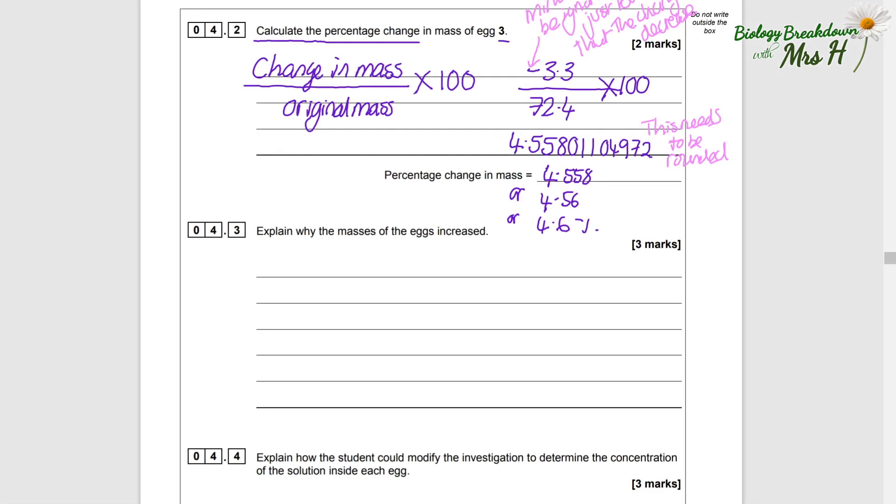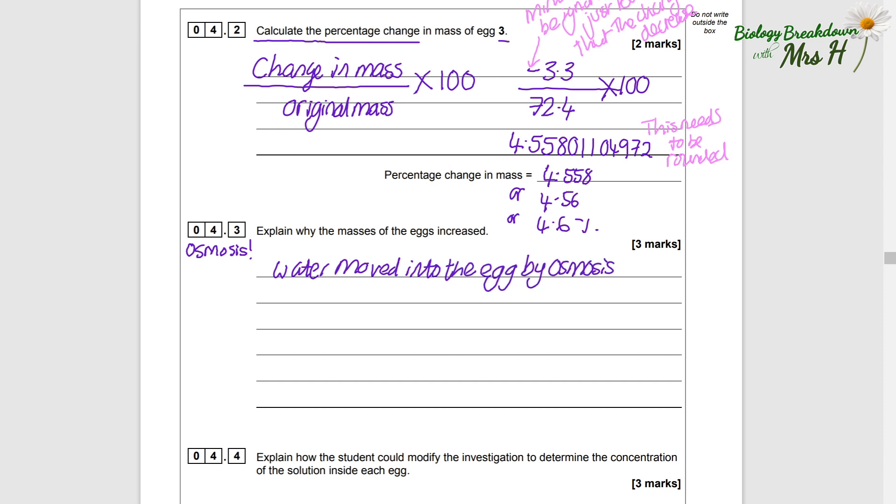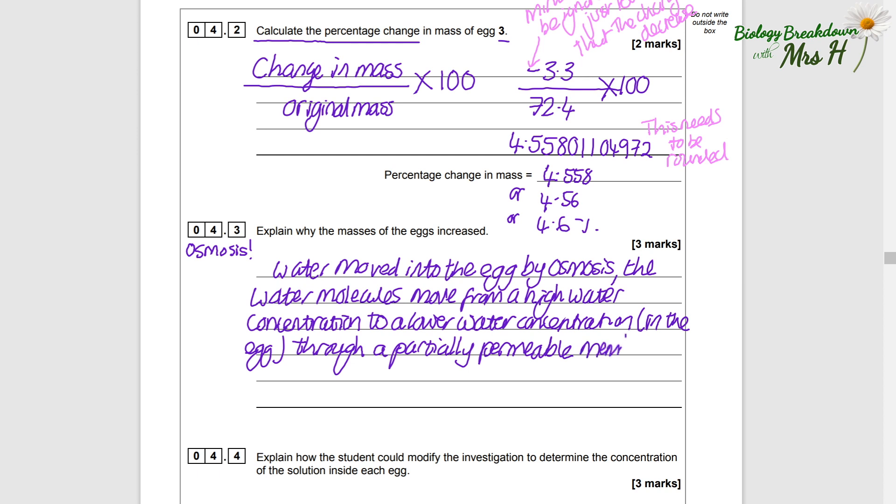Explain why the masses of the eggs increased. We have a look at the data - all of the eggs did increase in mass after being left in water for 20 minutes. Remember they had their shells removed, so they were only surrounded by water. And when you get a question and there's water involved, it's usually going to be about osmosis, and that is exactly what has happened.